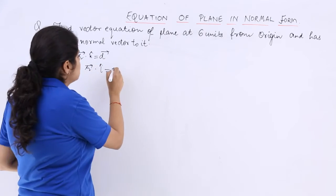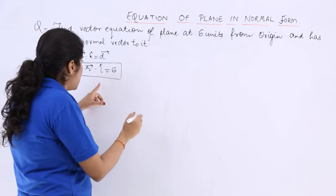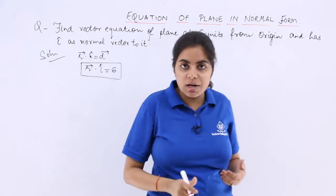d is what? Distance from origin which is 6 units. So this is the answer which says r vector dot i cap is equal to 6.